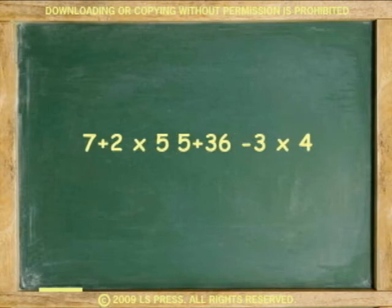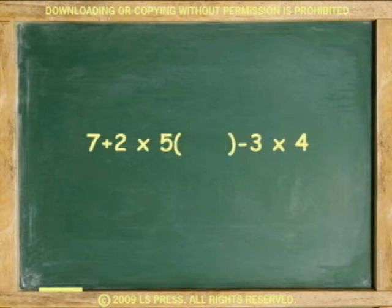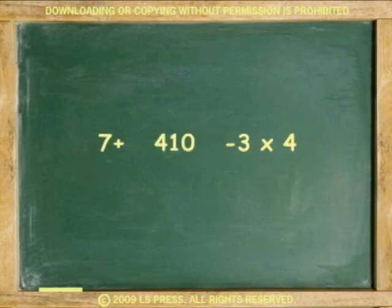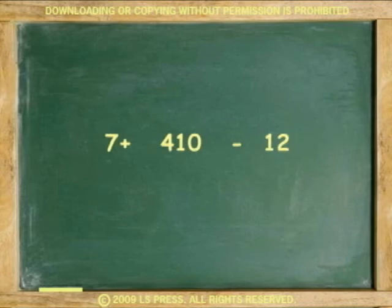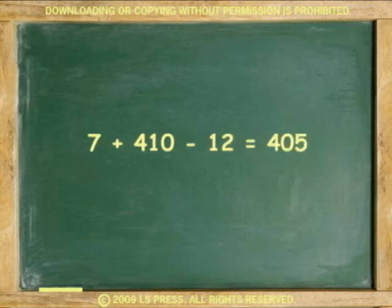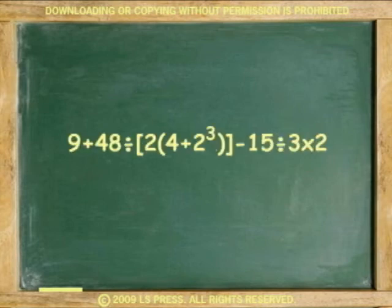5 plus 36 is 41. We now do all multiplications. 2 times 5 times 41 equals 410, and 3 times 4 is 12. Finally, we add 7 plus 410, and subtract 12, to get 405.